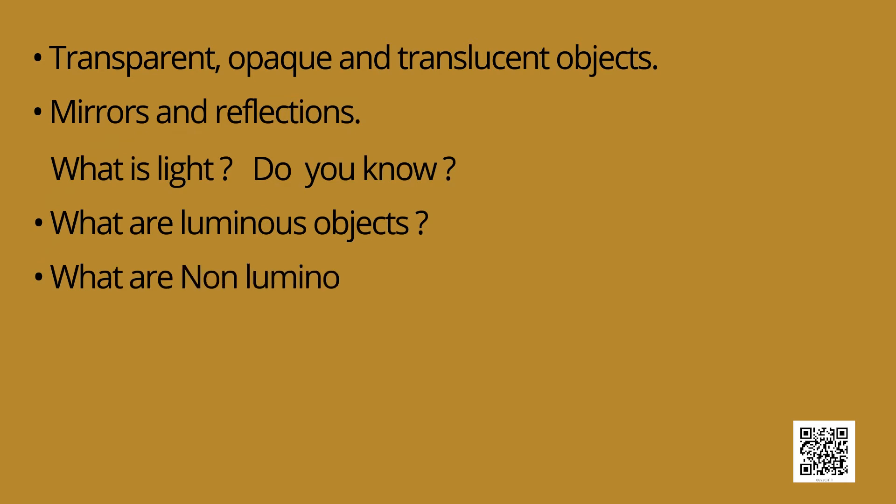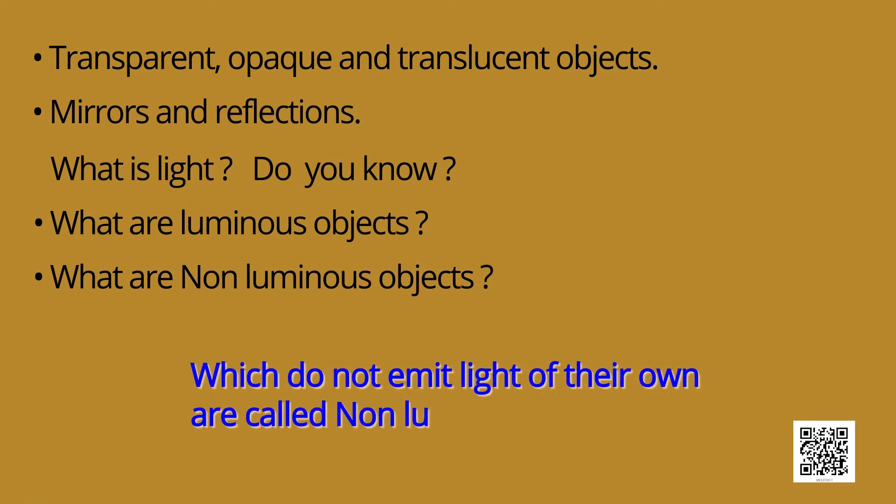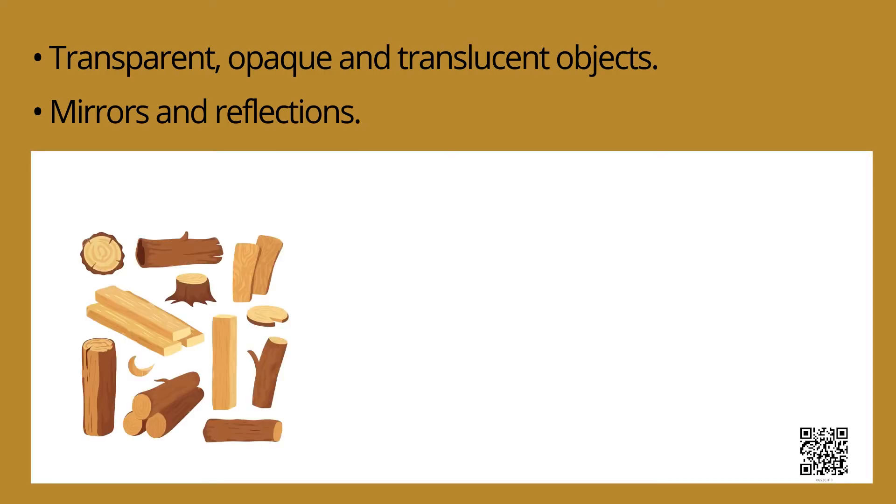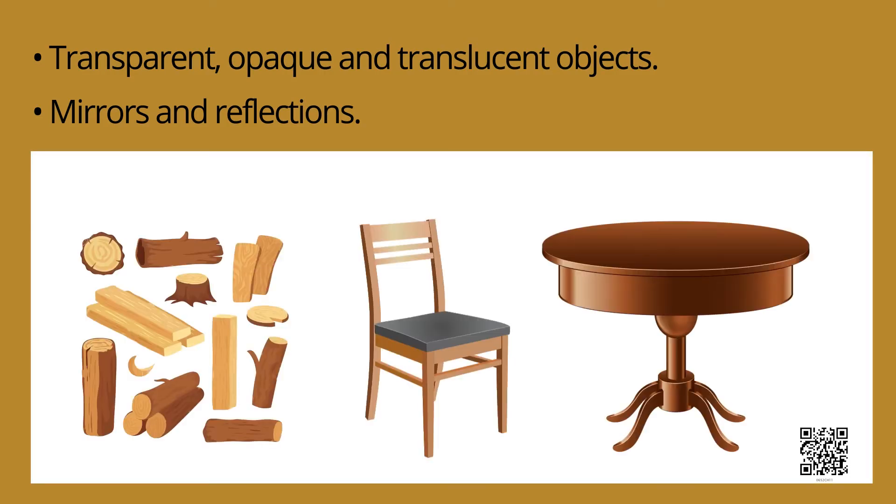What are non-luminous objects? Objects which do not emit light of their own are called non-luminous objects. Example, wood, chair, table etc.